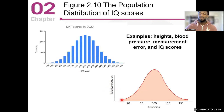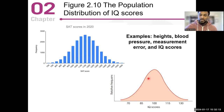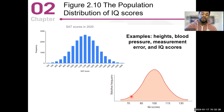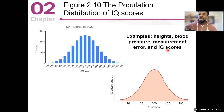IQ scores — if we're looking at IQ scores for the world, if every single score is plotted for the population, that's what we call a distribution: a lot of people in the middle around 100, and then fewer people scoring higher and fewer scoring lower. So high blood pressure, measurement error, and high IQ scores are all located on that natural phenomena of the normal distribution curve.